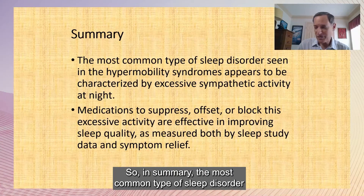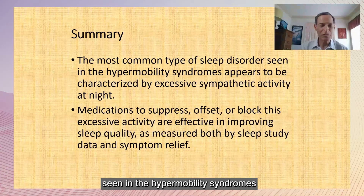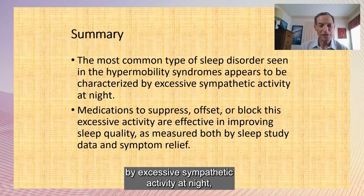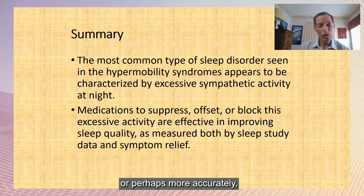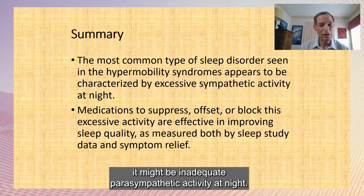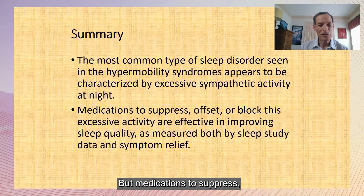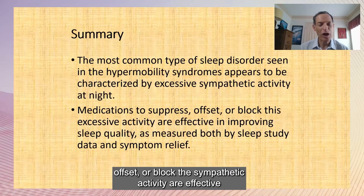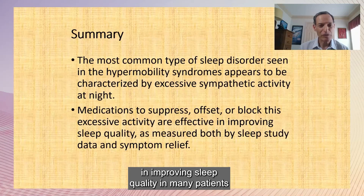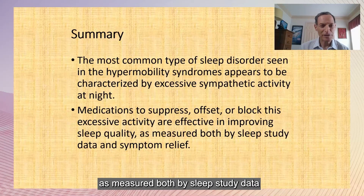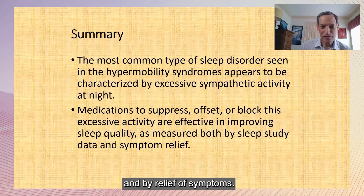In summary, the most common type of sleep disorder seen in hypermobility syndromes appears to be characterized by excess sympathetic activity at night, or perhaps inadequate parasympathetic activity at night. Medications to suppress, offset, or block sympathetic activity are effective in improving sleep quality in many patients, as measured both by sleep study data and by relief of symptoms.